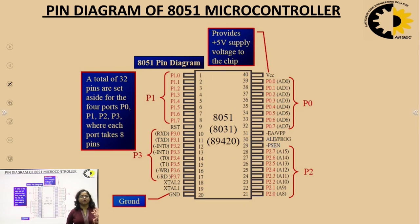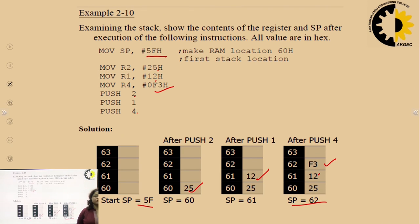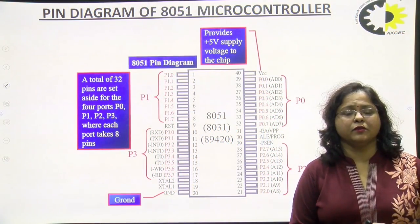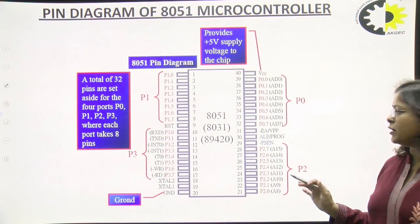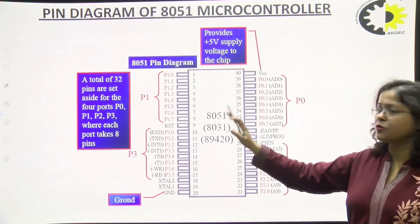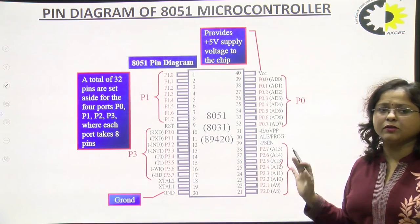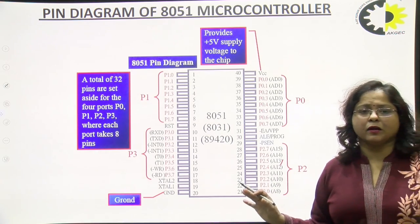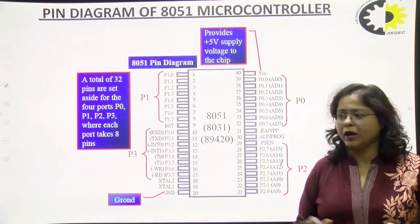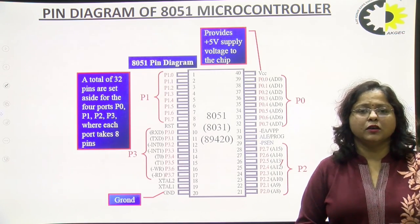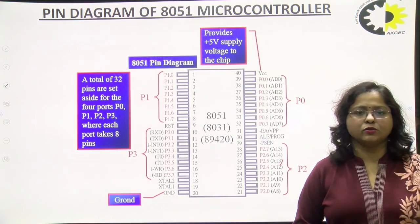In this way the 8051 works. The next topic is the pin diagram of 8051 — it is a 40-pin IC and consists of four 8-bit ports: P0, P1, P2, and P3. We will continue with the pin diagram, its operating modes, and addressing modes in the next lectures. Thank you all.